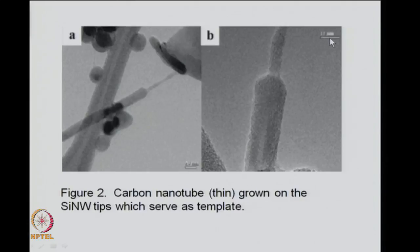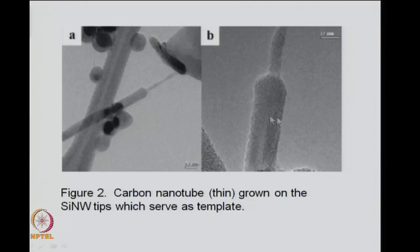This is a close-up view where you can see the silicon, which has a larger diameter, and on top of that you have the carbon nanotube. The scale here is around 10 nanometers, so about 5 to 7 nanometer thick carbon nanotubes grown on around 15 to 20 nanometer thick silicon nanowires. The template-based techniques are very useful to prepare nanowires which are precisely ordered in a particular fashion.